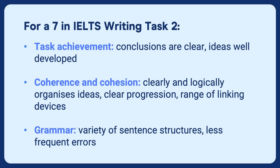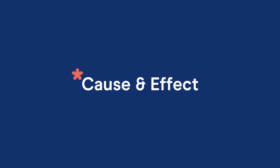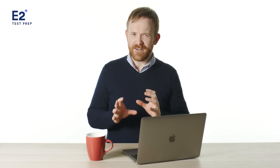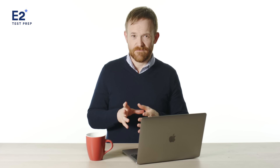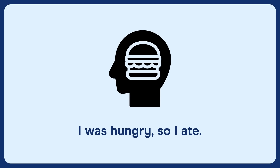To focus on this part of the marking criteria, we're going to focus on one simple aspect of critical thinking: cause and effect. This can be exemplified with an easy personal example — I was hungry, so I ate. Being hungry was the cause, and the effect was I ate.